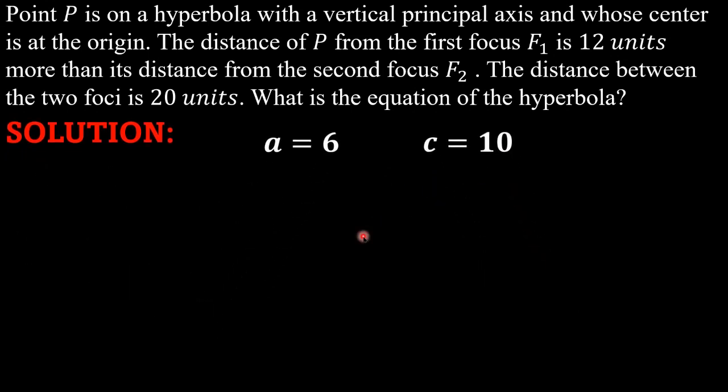Now that we know the values of a and c, we are going to use the Pythagorean theorem. That is c² is equal to a² plus b². So by substitution, 10² is equal to 6² plus b². Ang value ng c natin ay 10, so ginagay ko siya dito. And ang value ng a natin ay 6, so sinubstitute ko siya dito.